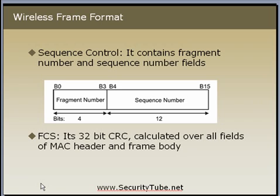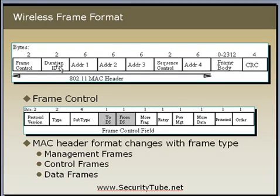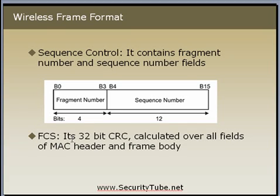Then comes the actual frame body. In the frame structure we have already seen: frame control, duration, the three addresses, the sequence control, and the fourth address — which as explained will only be present in WDS mode. After that comes the actual frame, which can be encrypted or clear text. At the end of every frame, an FCS or frame checksum will be present. It's a 32-bit CRC checksum calculated over all fields of the MAC header as well as the frame body.